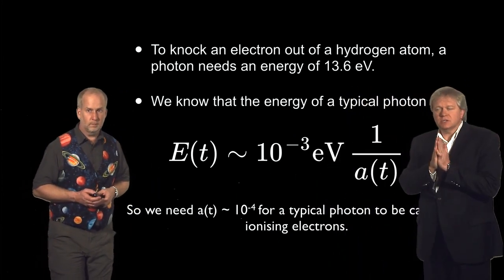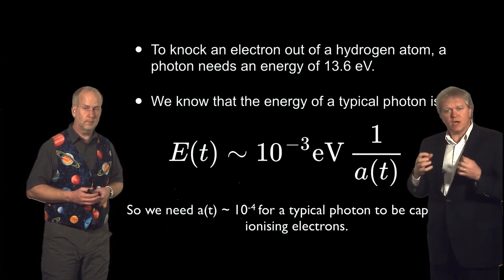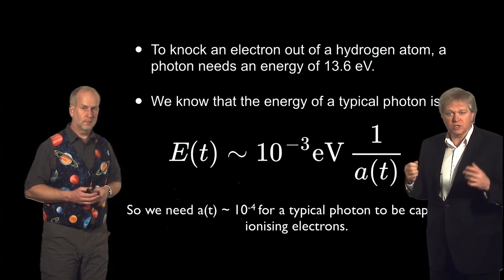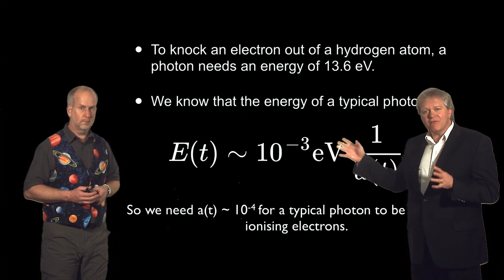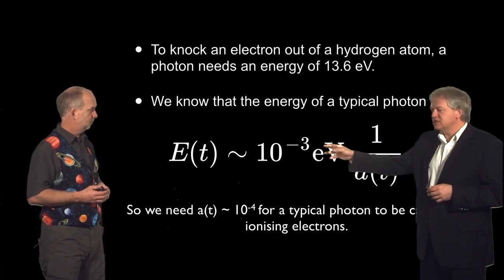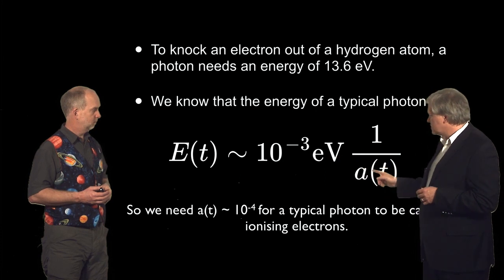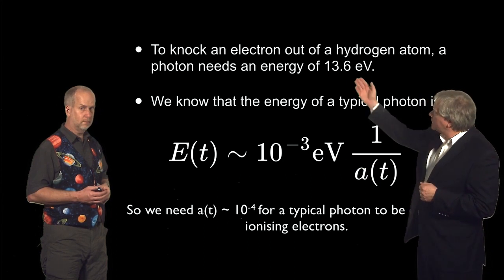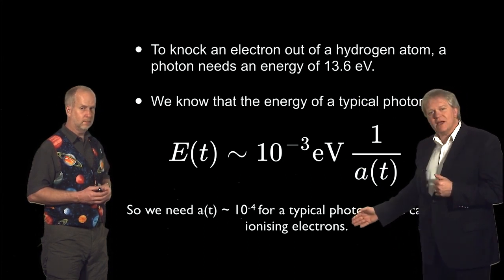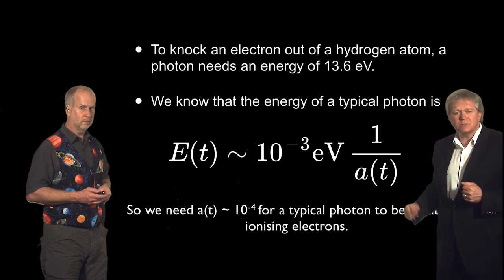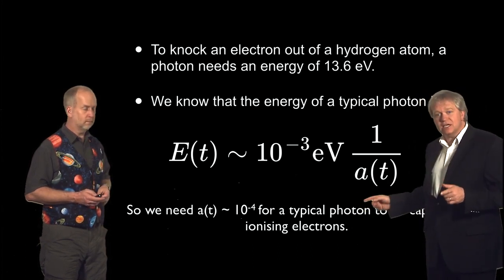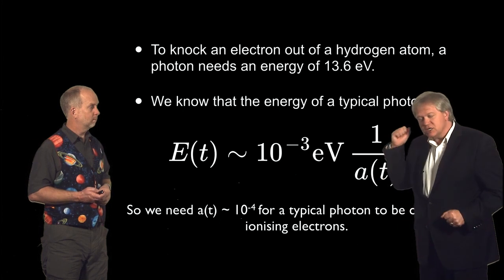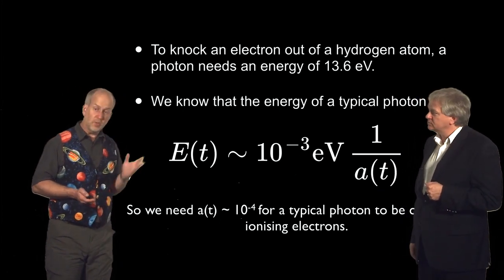So one thing we need to know is that to knock an electron out of a hydrogen atom, you can do that with energy. And it turns out you need 13.6 electron volts of energy to do this. Now Paul showed us that the average energy of a typical photon in the universe is 10 to the minus 3 electron volts divided by the scale factor compared to the current scale factor. So if we want to get up to 13.6 eV, we really need to have the scale factor be about 10,000 times smaller than it is today. And in that case, a typical photon will be able to, when it strikes a hydrogen atom with an electron, knock that electron off its proton. That's giving us the glowing fog.